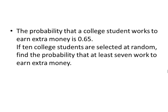A couple more to go. The probability that a college student works to earn extra money is 0.65. If ten students are selected at random, find the probability that at least seven work to earn extra money. At least seven is x greater than or equal to seven out of the ten. That's our value for n. And we're looking for at least seven who work, and the probability that a student works is given 0.65. That's our value for p.